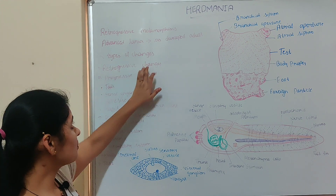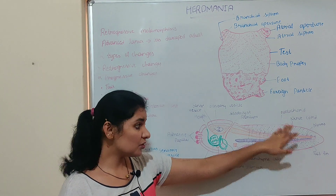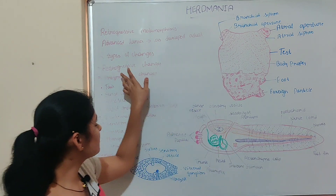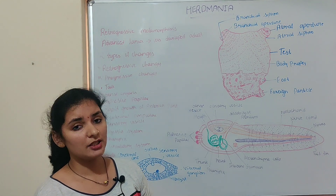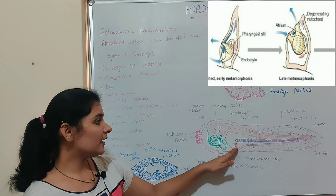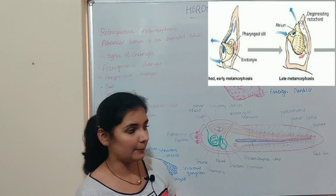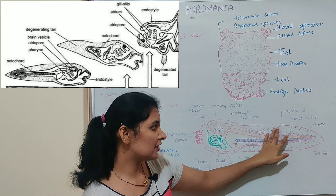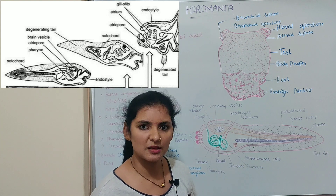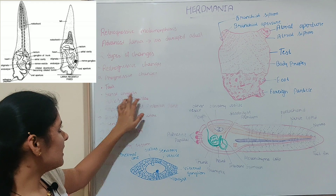Retrogressive changes involve destruction and disappearance of certain larval structures. Those structures which undergo retrogressive changes are lost during the process of metamorphosis and are not present in the adult form. The first structure is the tail. Soon after attachment of the larva to the substratum, the long tail along with the caudal fin gets shortened and finally disappears. This means structures present in the tail — like the nerve cord, notochord, and tail muscles — all disappear during metamorphosis.